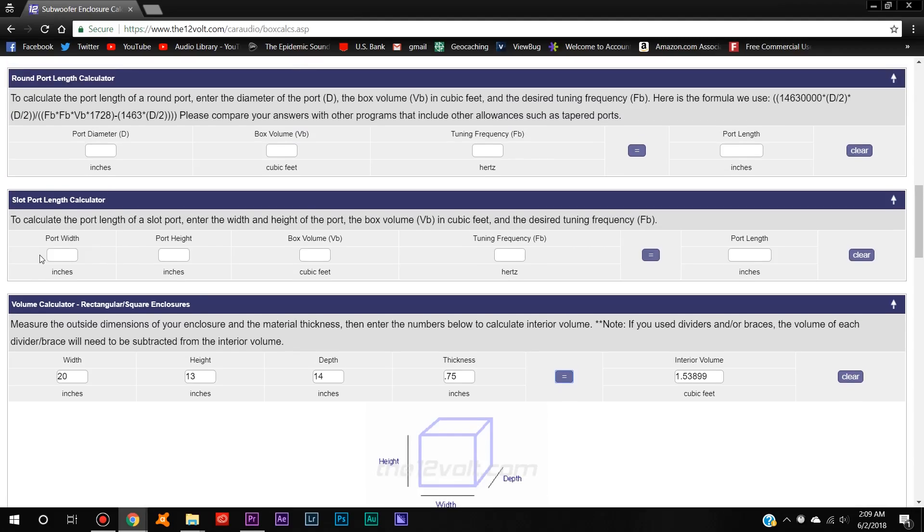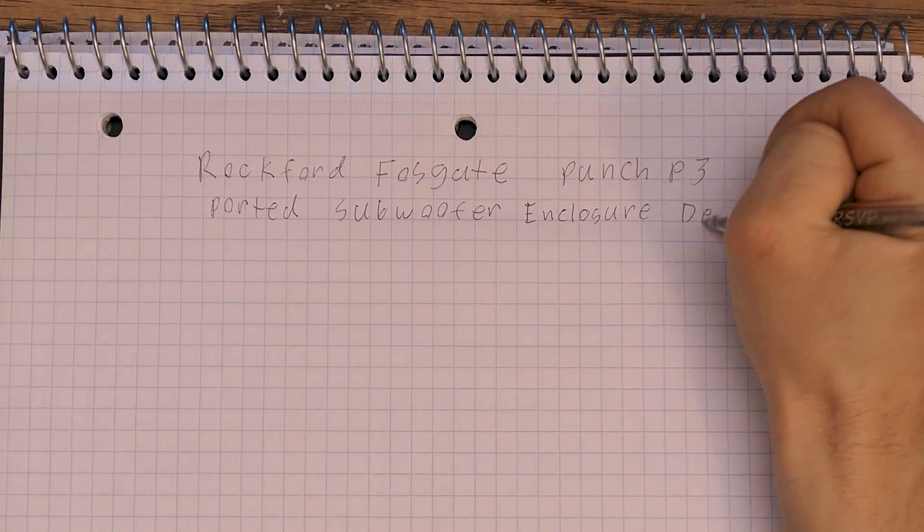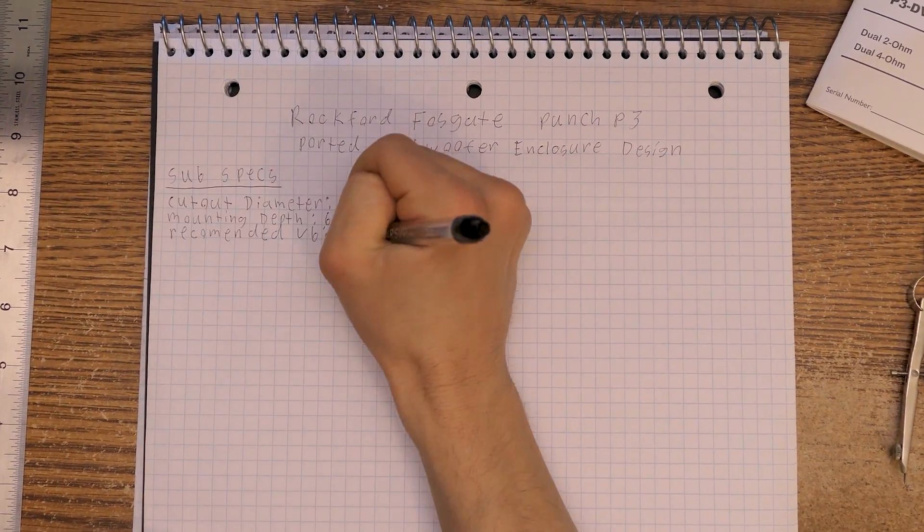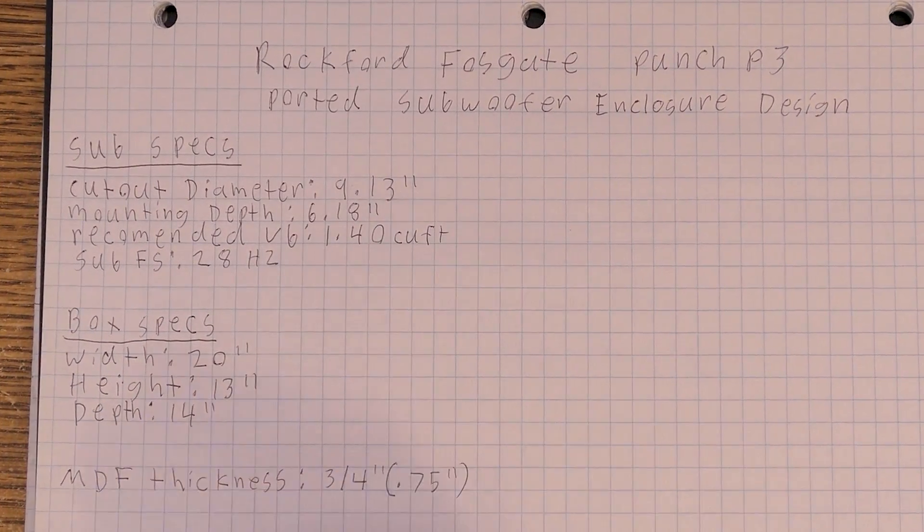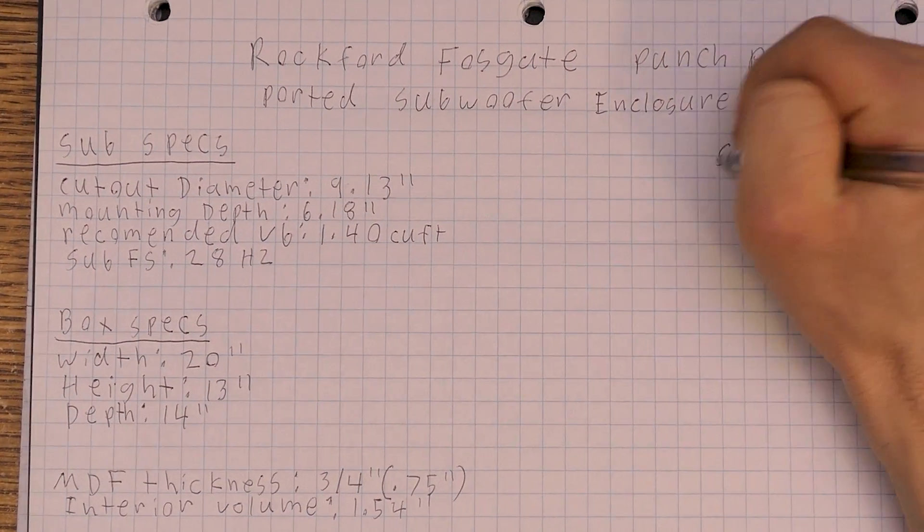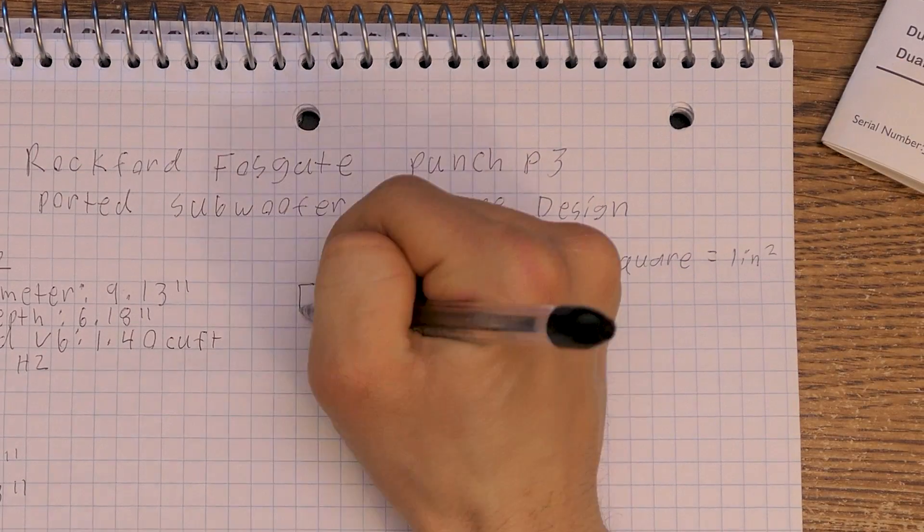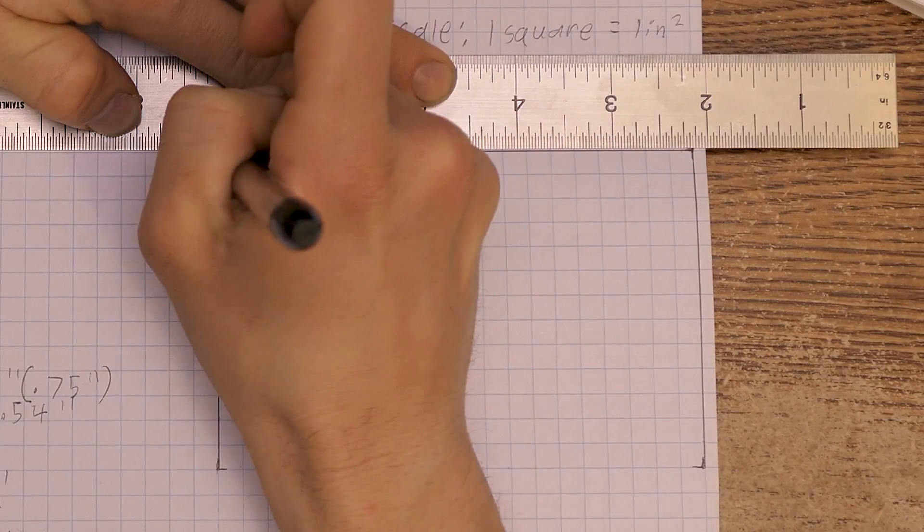Before I calculate the port, let's go ahead and start designing. First thing, I like to jot down what subwoofer it's for, and some important specs about the subwoofer, like cutout diameter and mounting depth. Then, the basic specs for the box I'm building just so I have everything in one place. Since this will be drawn to scale, one square will equal 1 inch cubed in real life. For the front view, I'll start out by drawing a rectangle 20 by 13.